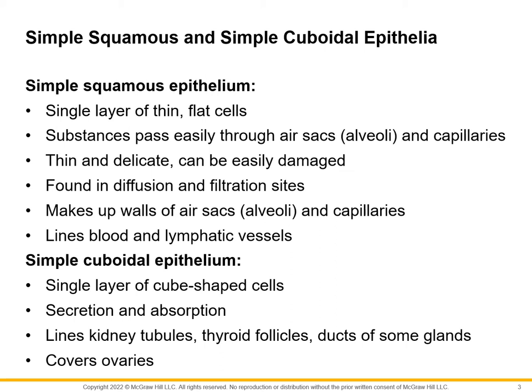Simple squamous epithelium is one cell layer thick of flattened cells, and it's incredibly thin. This is found in areas where we want the thinnest possible dividing line between two things. The classic place we see it is the air sacs of the lungs — the alveoli. That's the tissue slide we have in lab. We want it super thin so it divides air from blood, but not so thick that respiratory and blood gases can't transfer back and forth.